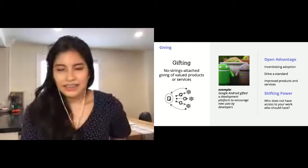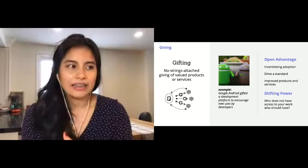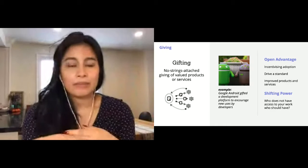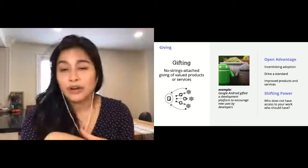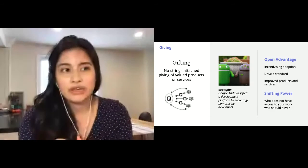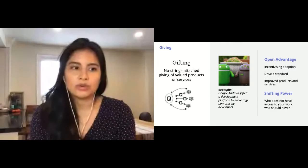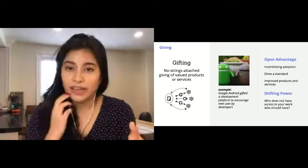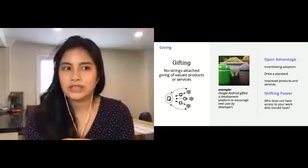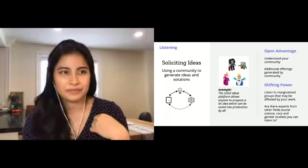The first is giving. Many of you write your open source software and give it away, so no strings attached, giving a valued product or services. The example from the study is that Google Android gifted their development platform to encourage new uses by developers. There's a lot of advantages to working openly like this. It incentivizes adoption by giving it away for free. If you're trying to drive a standard, by giving it away for free it really helps with adoption. You get improved products and services if you have more people using it and giving you feedback. But if you're using this to shift power, really ask yourself: Who does not have access to your work? Who should have? I know a lot of times your work is publicly available online and everyone could technically come and try to find it, but sometimes the people who should have that access don't know where to look or don't understand where to find it. Even just intentionally giving your work to someone who really needs it can be really powerful and help shift that power.